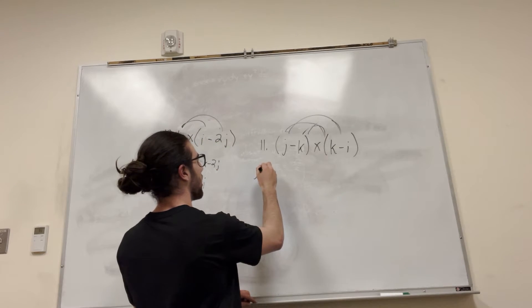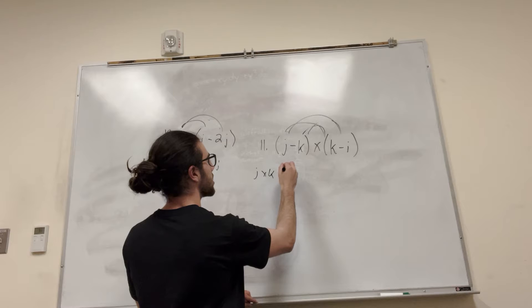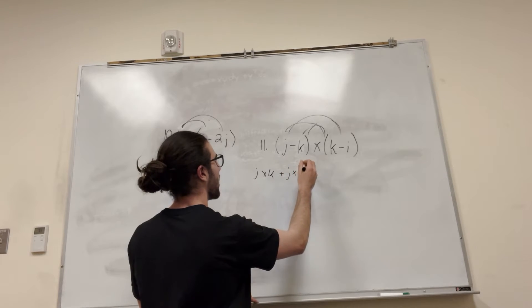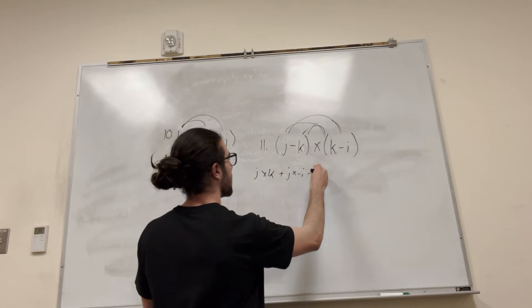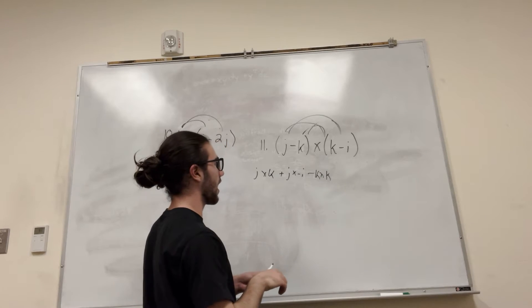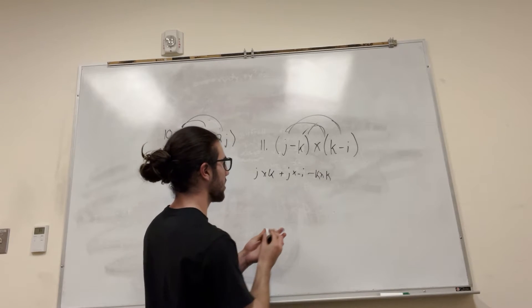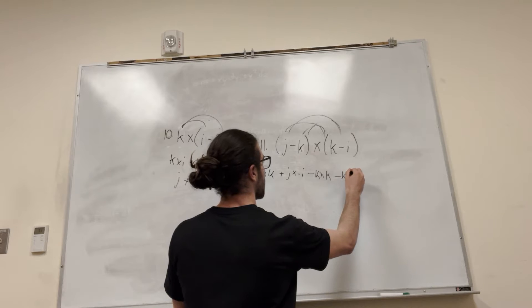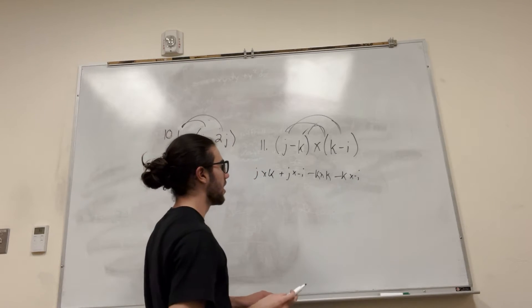Alright, so it's going to be j cross k, plus j cross negative i, minus k cross k, and then negative k cross i, negative i.